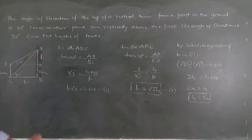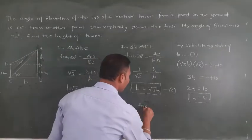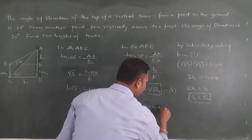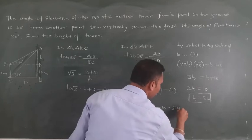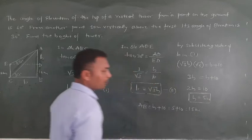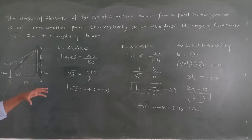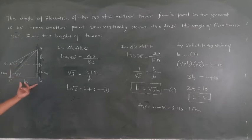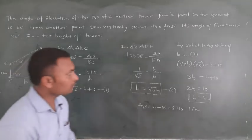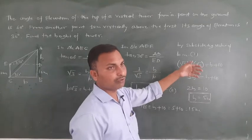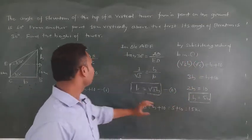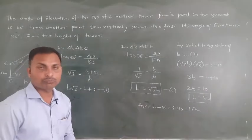If the total height is needed, it is h plus 10, so AB equals 5 plus 10 equals 15 meters. The total height of the tower is 15 meters. This is a simple question — they gave 60 degrees and 30 degrees, the base BC is the same. Apply trigonometric ratios to each triangle one by one, substitute one equation into the other, and you get your answer.